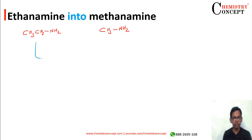Let's first react this compound with HNO2. When a primary amine, a primary aliphatic amine, reacts with HNO2, nitrous acid, it forms alcohol. So we'll get ethanol.